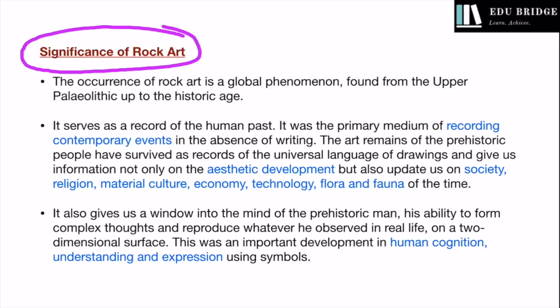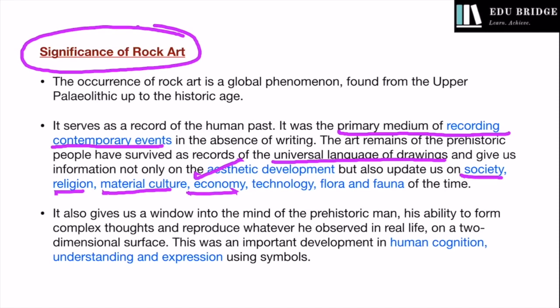Now let us look at the significance of rock art. The occurrence of rock art is a global phenomenon. In the absence of writing, it was the primary medium of recording contemporary events. Thus, prehistoric people used to record their contemporary events in the universal language of drawings. This gives us information not only about their aesthetic development, but also about their society, religion, material culture, economy, technology, and flora and fauna. More importantly, it gives us an insight into the prehistoric mind — through these paintings, we are able to judge how developed or complex the human mind was.